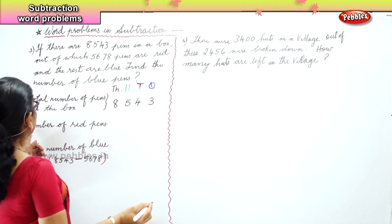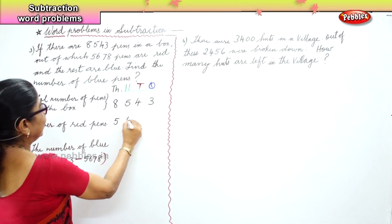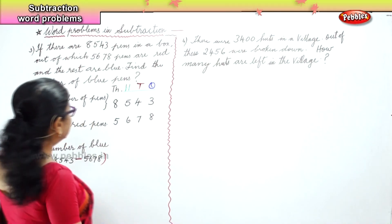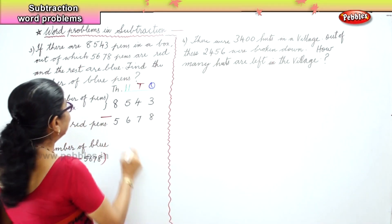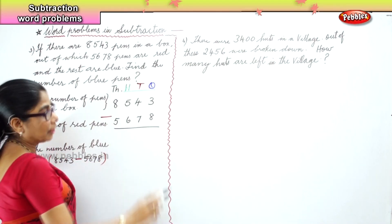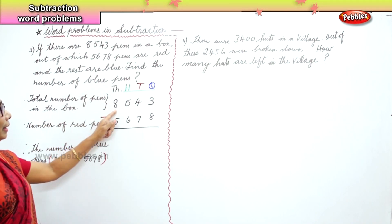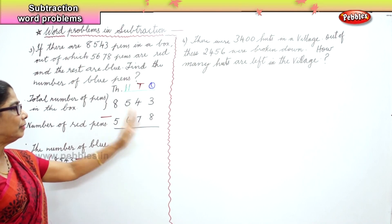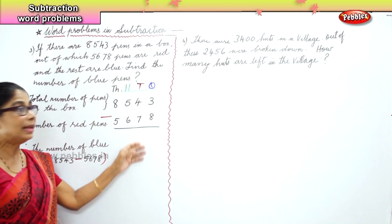Number of red pens are five thousand six hundred and seventy-eight. So this has to be taken away — put the minus sign. We're going to take away this from that. This time we're going to be very careful. Total pens: eight thousand five hundred and forty-three. Red pens: five thousand six hundred and seventy-eight. Therefore, we find the number of blue pens — now we minus.